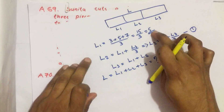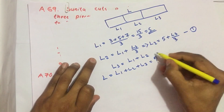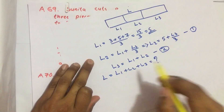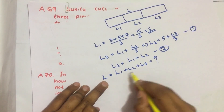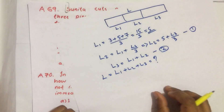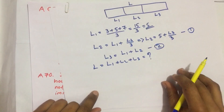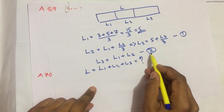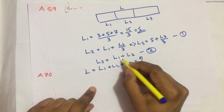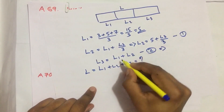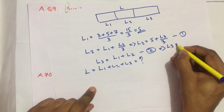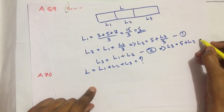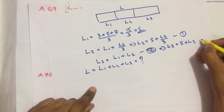We already have L1, and we have two equations. By solving these two equations we can find L2 and L3, then put those values in the total to get the answer. Substituting L1 = 5 into the L3 equation gives L3 = 5 + L2. This is equation 2.